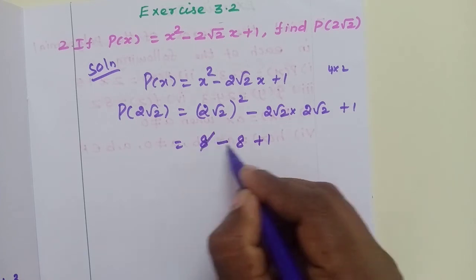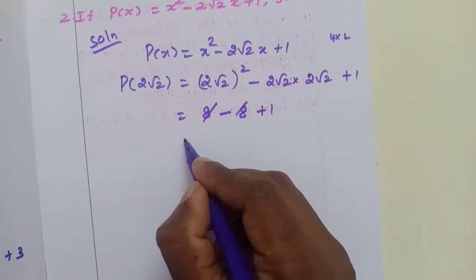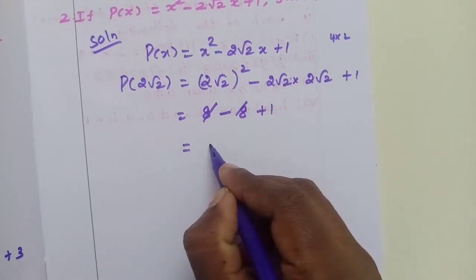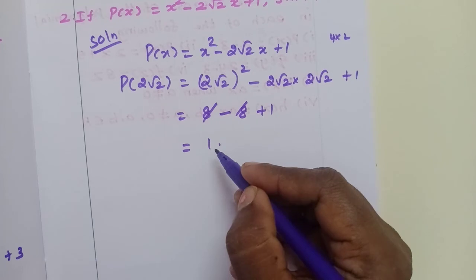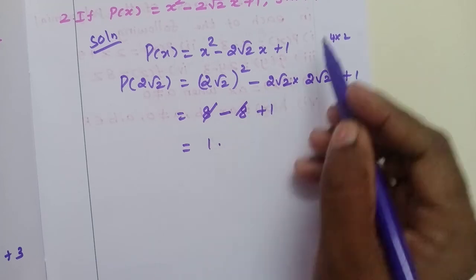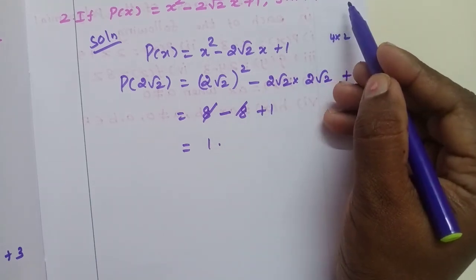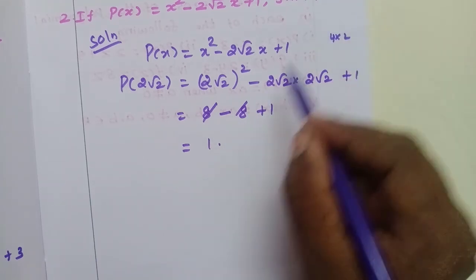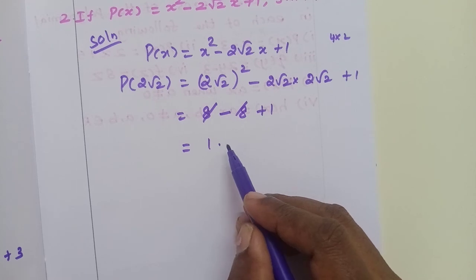So plus 8 minus 8 cancel, equal to 1. Therefore, p of 2 root 2 is equal to 1.